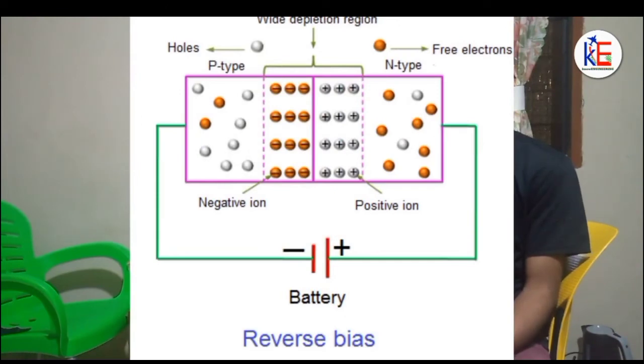And in the reverse bias, the positive terminal of the source is connected to the cathode, and the negative terminal is connected to the anode. When this happens, the depletion layer widens, making it difficult for conduction to take place. It is observed that during forward bias, the p-n junction acts as a conductor, and during reverse bias, it acts as an insulator.